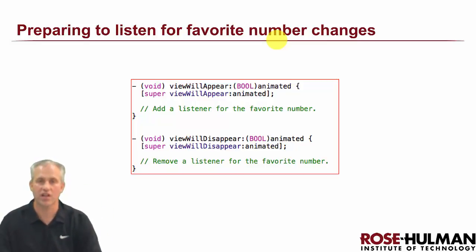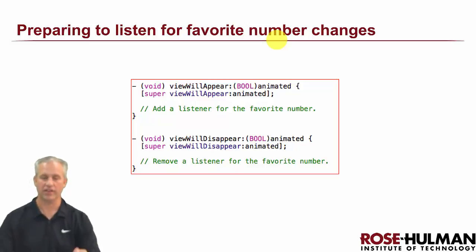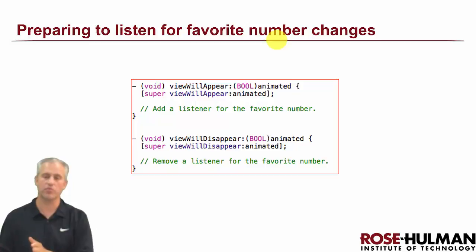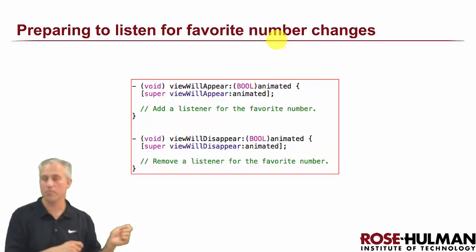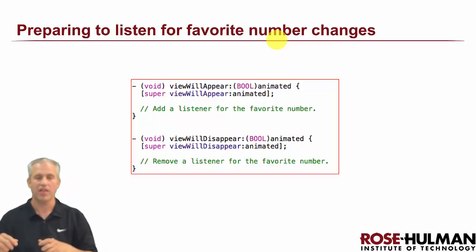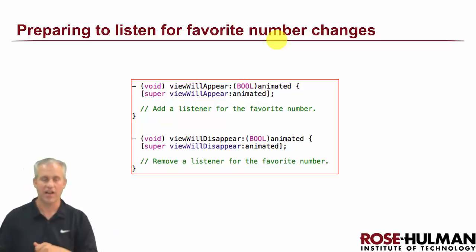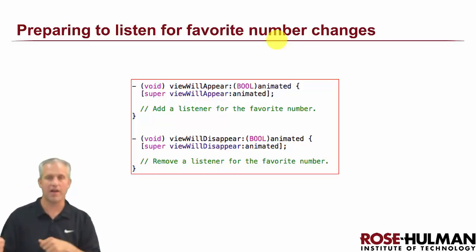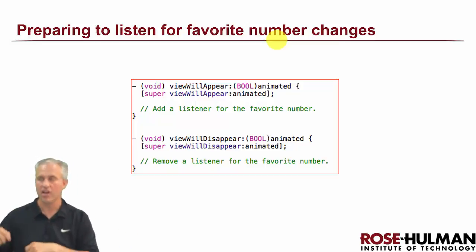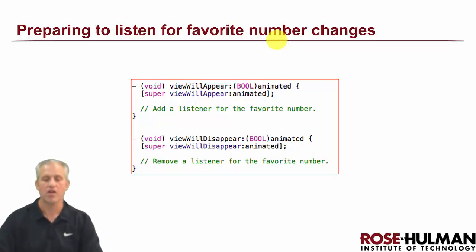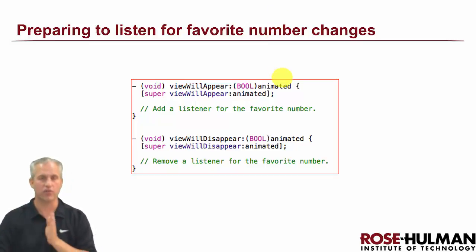That's just one thing you need to think about any time you're doing continuous listening, because these observers are very sticky. If you were to show a view controller and add a bunch of observers, then leave it without removing them, and then come back, you'd have double listeners — and then triple observers.